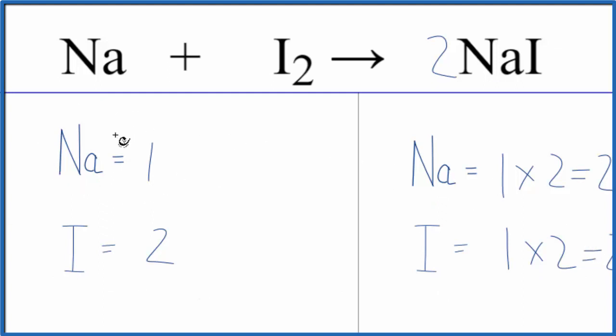Now we need two sodium atoms over here to balance these two. We can just put a coefficient of 2 in front of the sodium. 1 times 2, that gives us two sodium atoms. Those are balanced.